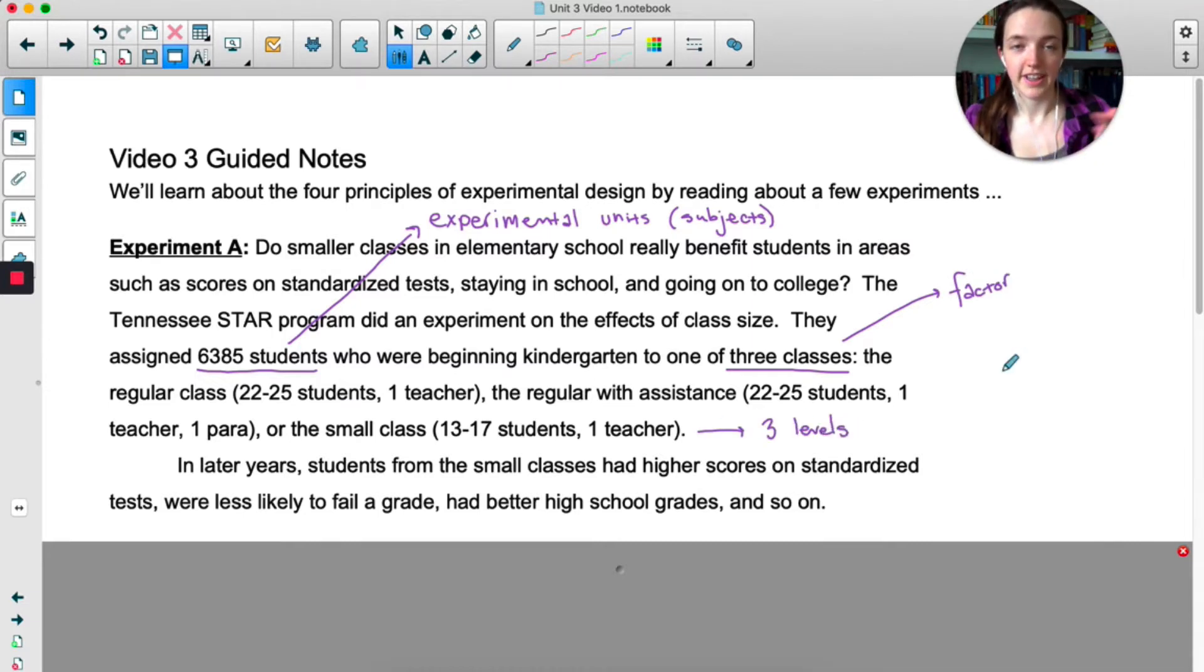The factor is the thing that you are changing. So we have three different classes. The class is considered the factor, and of that factor, we have three different levels. One level is a regular class with just a single teacher. Another level is regular with assistance, so you have one paraprofessional, and then the third level is a small class, so one teacher but fewer students. The factor is the thing that is changing, and the level is the different ways you can change that factor.